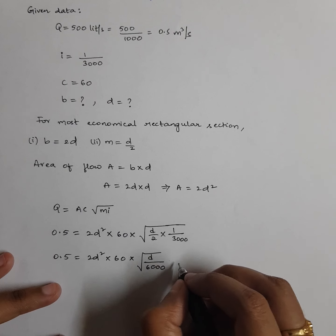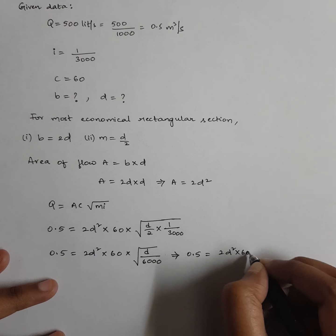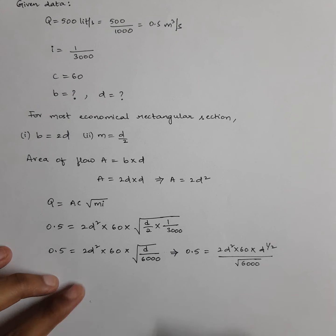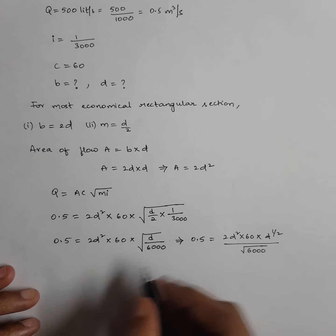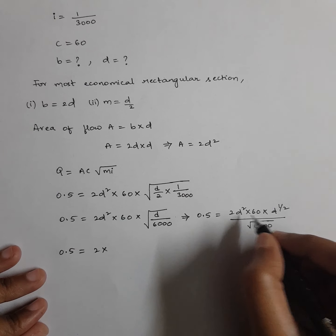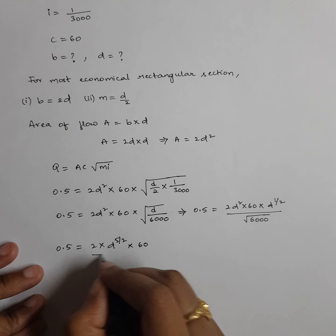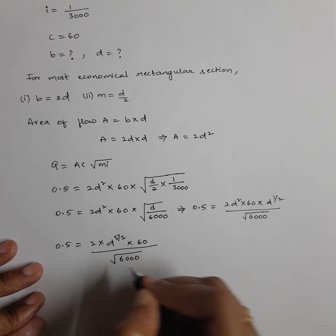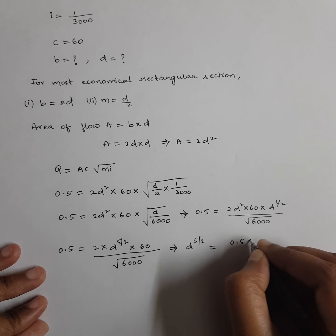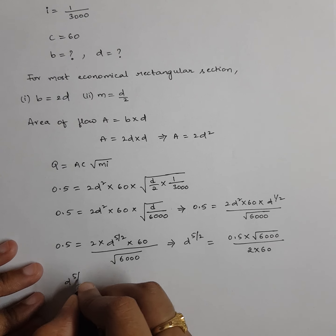Simplifying further: 0.5 equals 2D² into 60 into D^(1/2) divided by √6000. Combining D terms: D² multiplied by D^(1/2) gives D^(5/2). So 0.5 equals 2 into D^(5/2) into 60 divided by √6000. The only unknown is D^(5/2). Solving: D^(5/2) equals 0.5 into √6000 divided by (2 into 60).